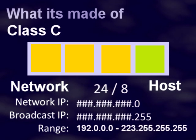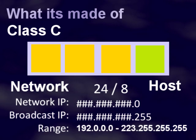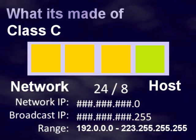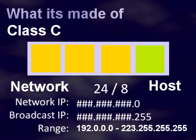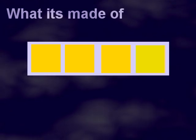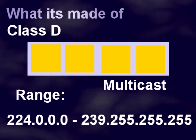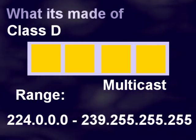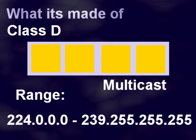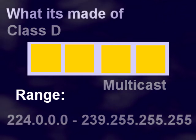A Class C address has 24 bits for the network and 8 bits for the host, with a range of 192.0.0.0 to 223.255.255.255. A Class D address is used for multicasting to a number of hosts, and can have a range of 224.0.0.0 to 239.255.255.255.